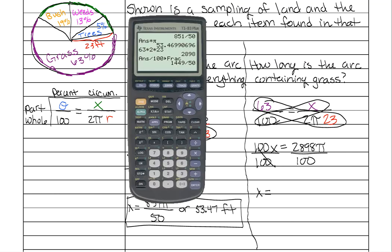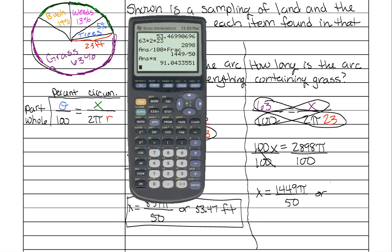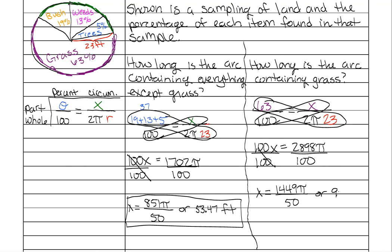1449 over 50. So 1449π over 50. And figure out your approximation. 91.04. And this is feet.